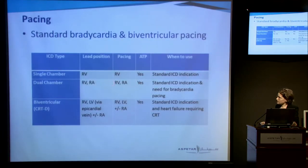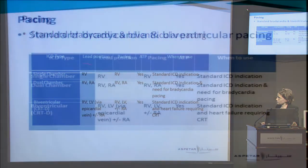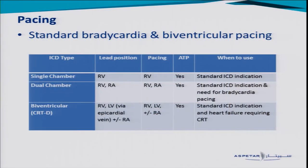In terms of pacing, you can pace different chambers of the heart depending on where you put the leads. You can pace just the right ventricle with one lead, or the right ventricle and right atrium with two leads if needed. If the patient has heart failure, you can also have a lead to pace the left ventricle — biventricular pacing. So a minimum of one lead and a maximum of three.